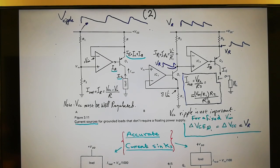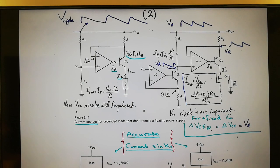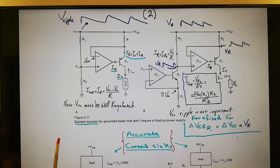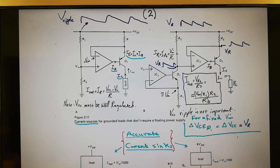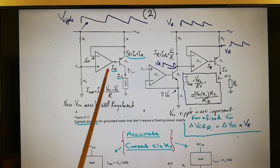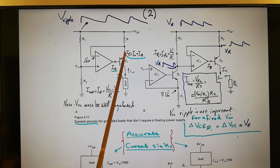Hello, this is my second lecture on operational amplifiers theory and applications. We are going to talk about current sources for grounded loads that don't require a floating power supply. Current sources using op-amps give much better performance than just transistors and resistors by themselves, because the magical feedback of op-amps increases that performance and accuracy.